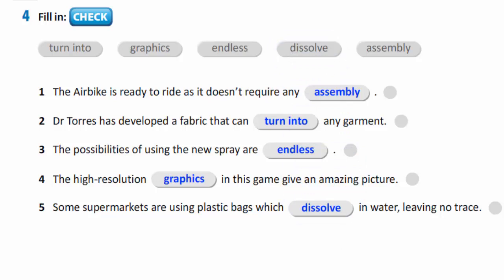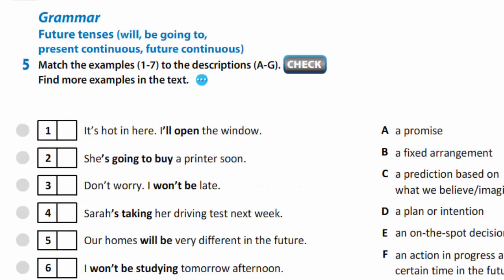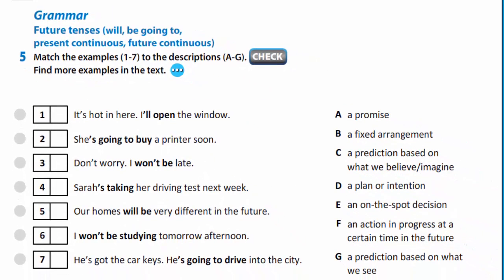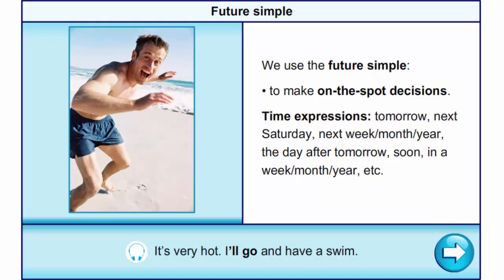Now let's talk about grammar. Exercise 5 – future tenses. Let's remember. We use future simple to make on-the-spot decisions. Time expressions are: tomorrow, next Saturday, next week, month, year, the day after tomorrow, soon, in a week, month, year, etc. For example: it's very hot – I'll go and have a swim.